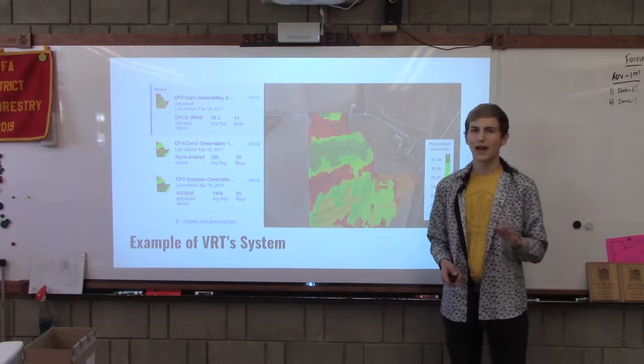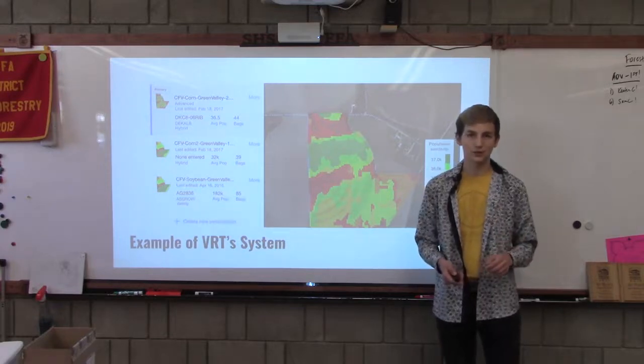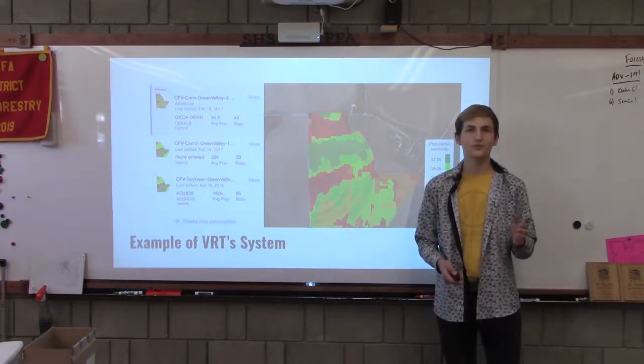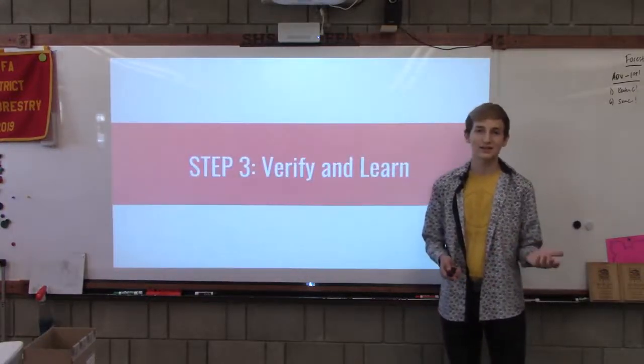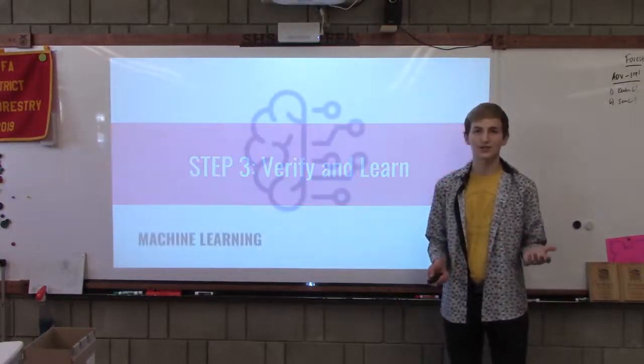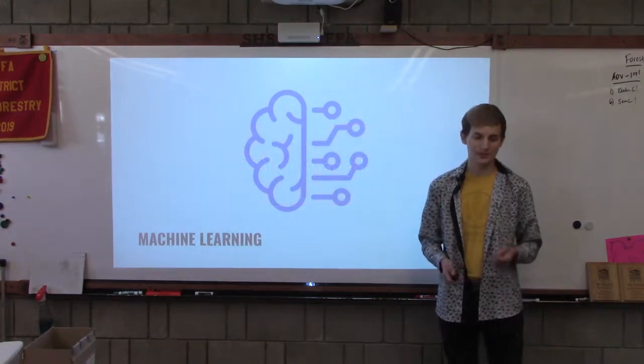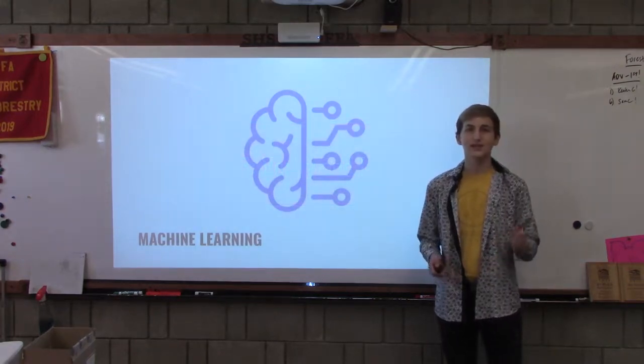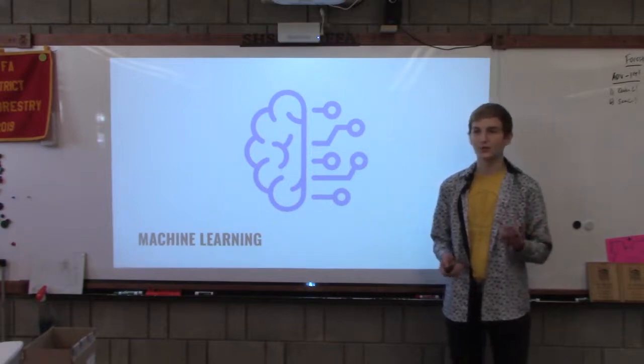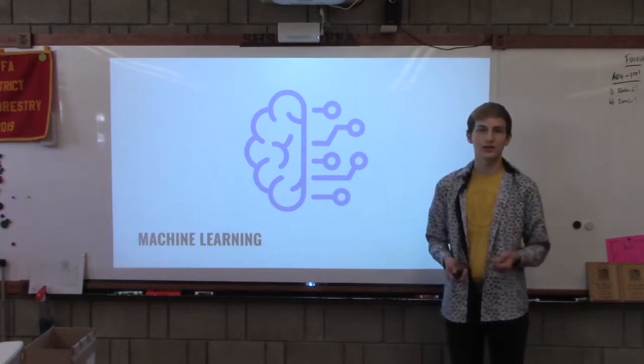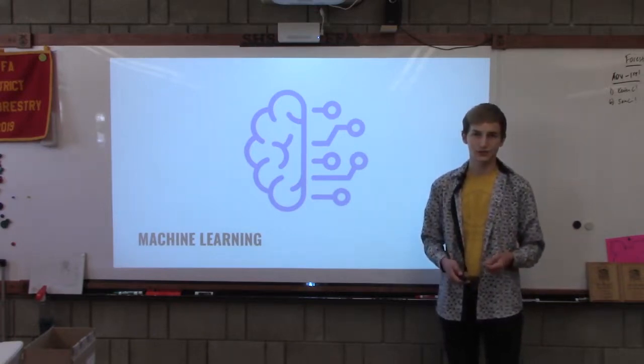However, we haven't covered the last step in Blue River's process, which is verify and learn stage. In this phase, VRT assesses the applied herbicide, makes adjustments, and learns from its mistakes. This is a really important stage because it is what makes variable rate technology so impactful to agriculture. By utilizing a closed loop cycle, Blue River technology is ensuring its technological efficiency.